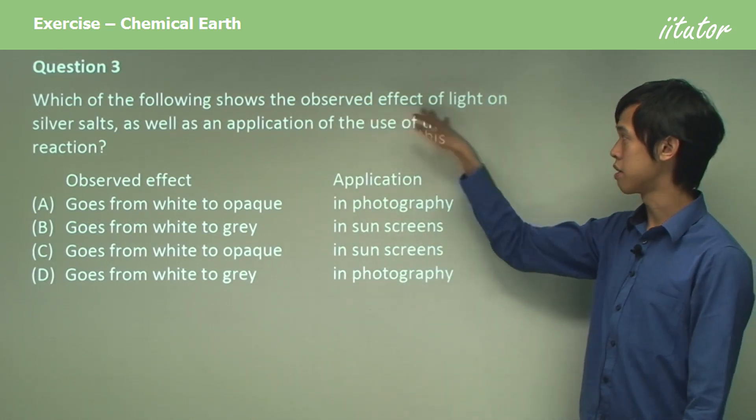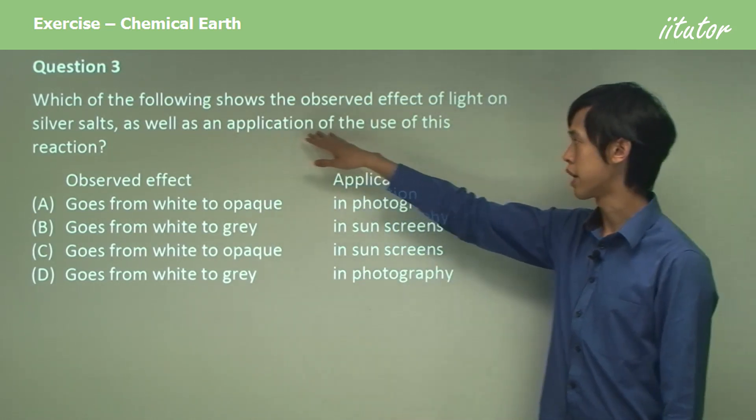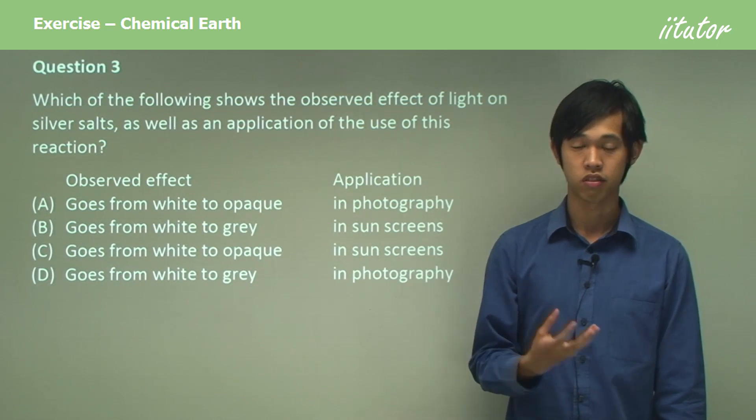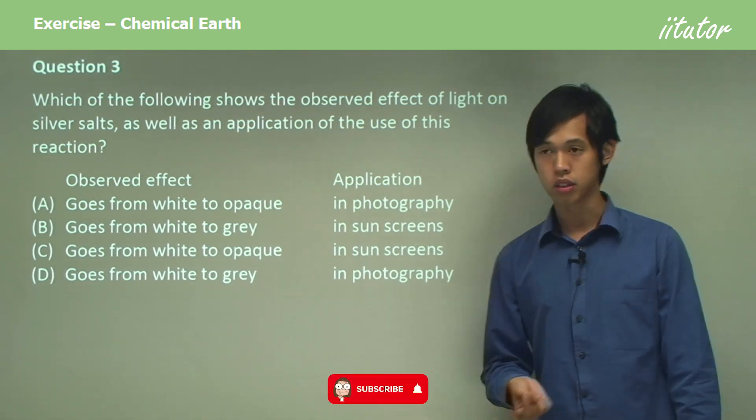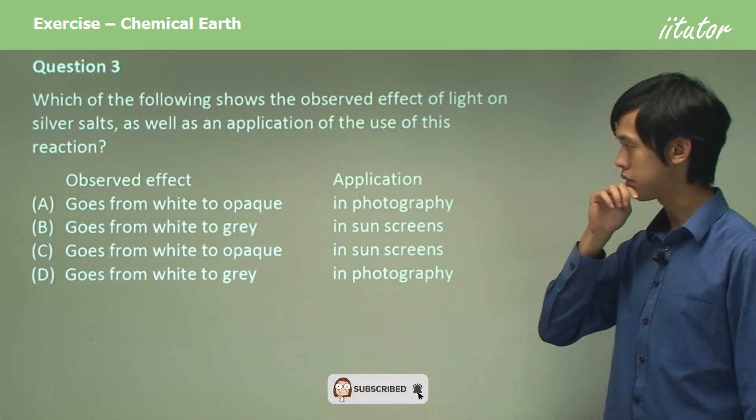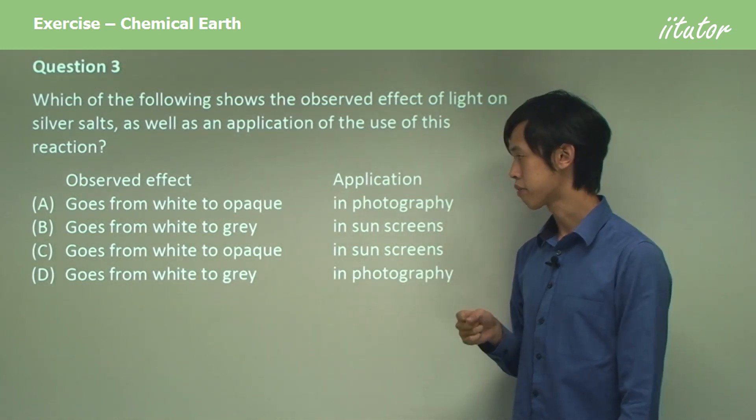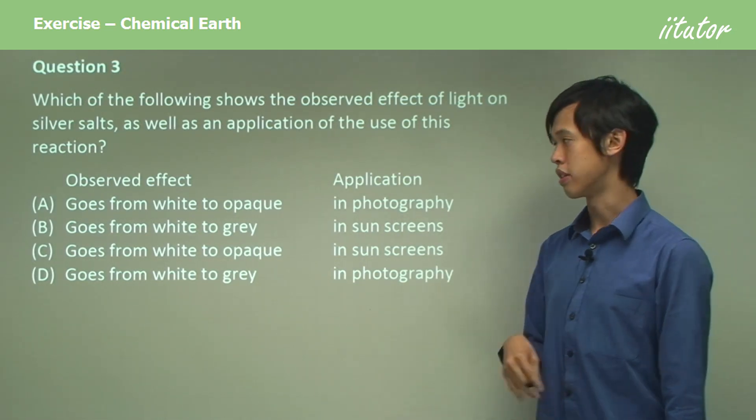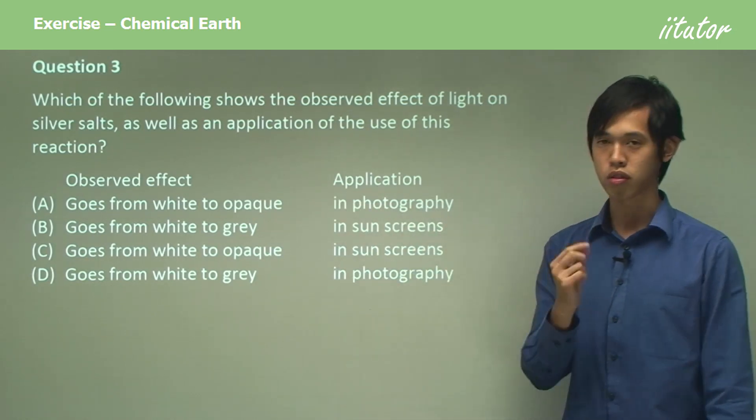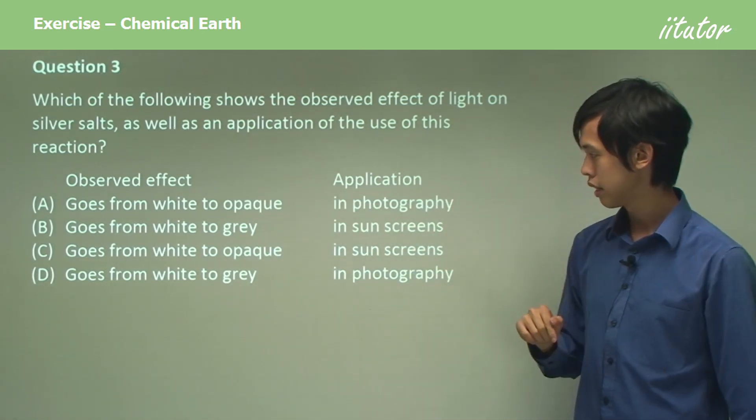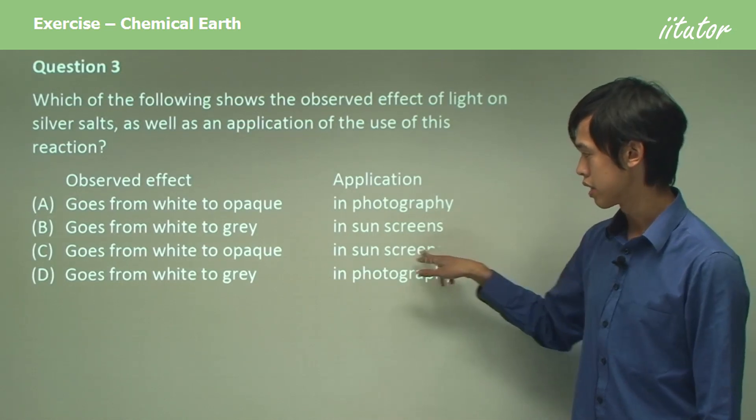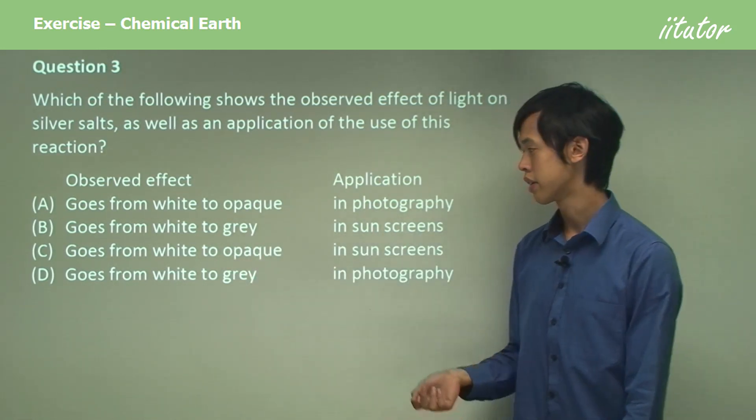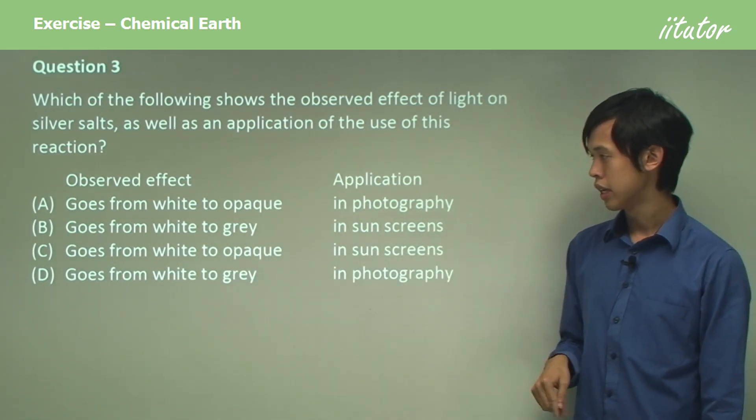Which of the following shows the observed effects on silver salts as well as an application of the use of this reaction? In your studies, we looked at a first-hand investigation of the effect of light on silver salts. Option A is not right because you can't go from white to opaque—white is opaque. Clear would be different to opaque, so it can't be A. Grammatically, that's wrong. And again, this one as well goes from white to opaque. Can't do that. So it's got to be these two.